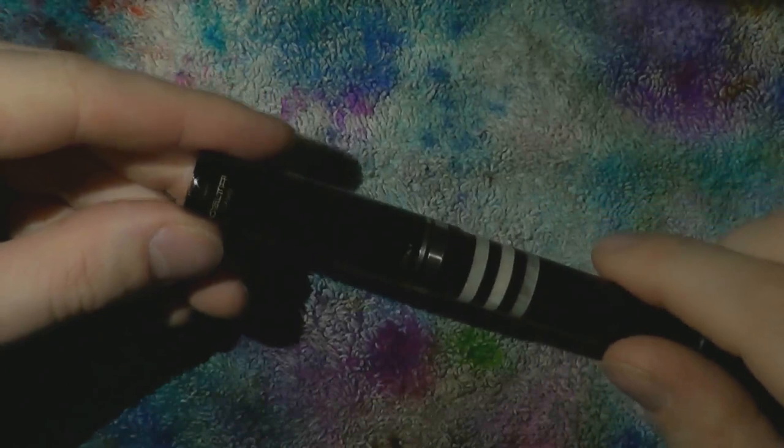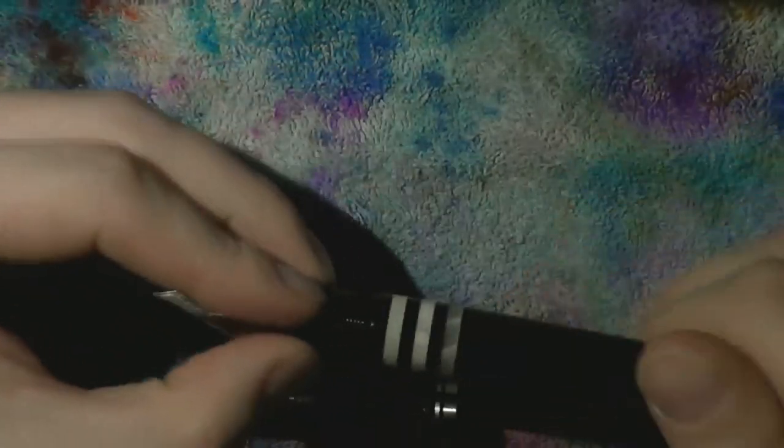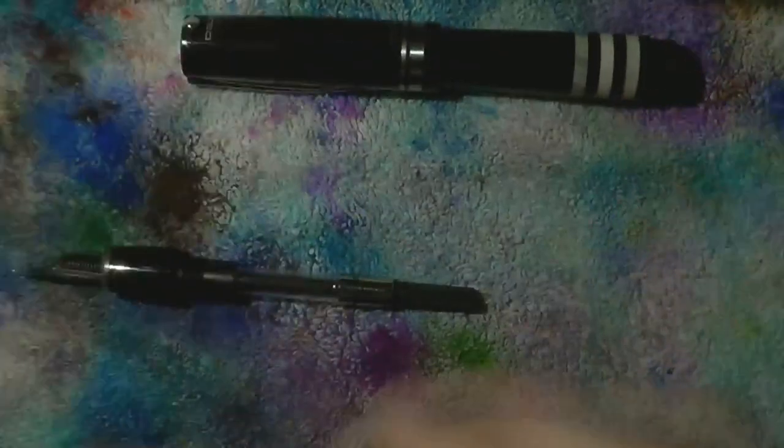Delta Titanio. Fairly easy to take apart. First, unscrew the cap. Unscrew the barrel. Post the cap for easy storage. Put them away.